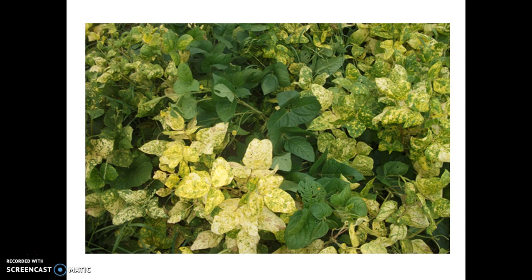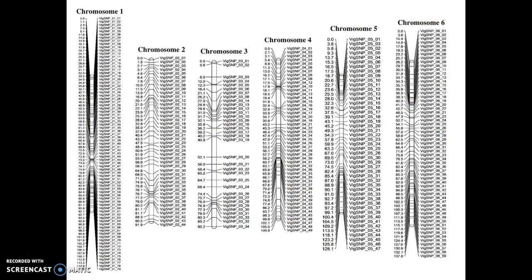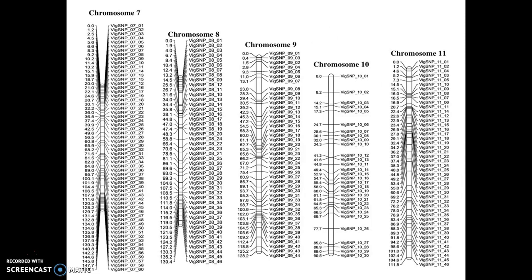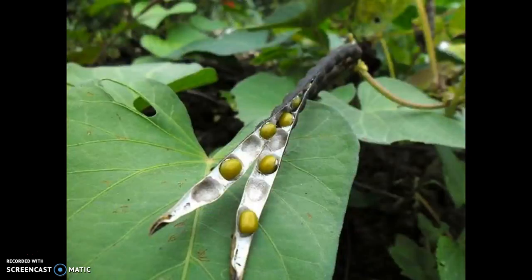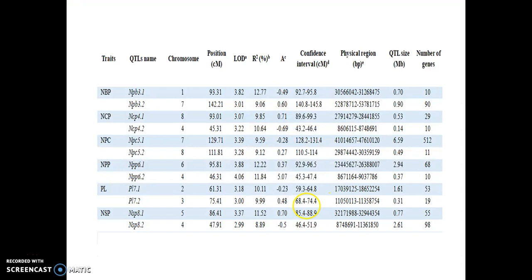The QTL mapping for MYMV resistance and other agronomic traits were also mapped. The QTL for MYMV resistance 1.1 is found to be on chromosome 4 between 60.7 and 65.6 cM with a genome size of 1.28 Mb. The gene MYMV 1.2 is found to be on chromosome 6 between 71.6 and 78.5 cM with a genome size of about 0.13 Mb. Also, the genes for other agronomic traits such as number of primary branches per plant, number of pods per plant, number of clusters per plant, number of pods per cluster, and number of seeds per pod were also mapped. Their QTL name, chromosome number and position, physical region, QTL size, and number of genes were also found.